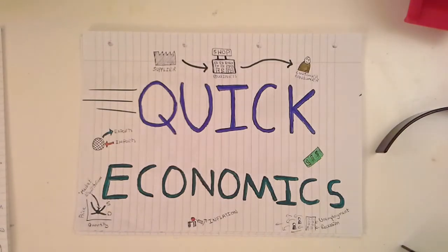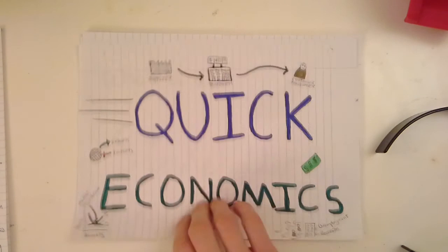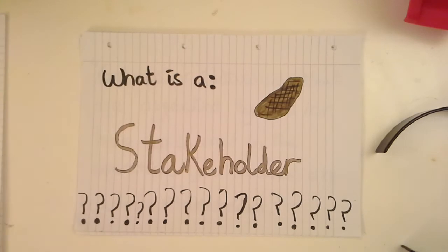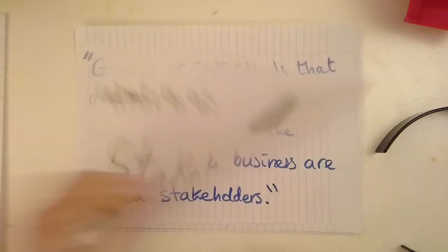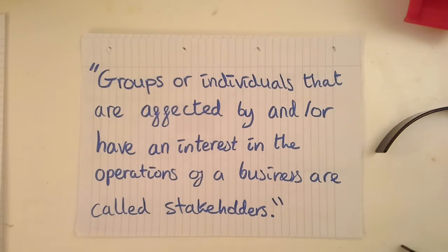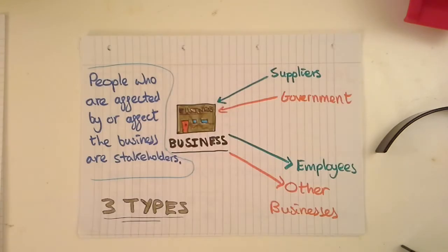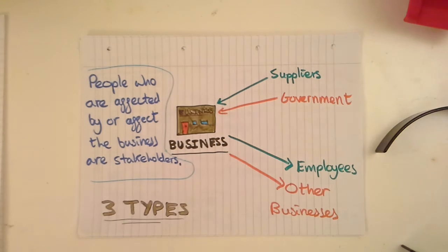Hi, my name is James and today on Quake Economics I'm going to be explaining what a stakeholder is. I'm going to start off by getting a formal definition out of the way. Groups or individuals that are affected by or have some sort of interest in the operations of a business are called stakeholders. Basically, the term stakeholder refers to any person or group of people that affects or are affected by the business.